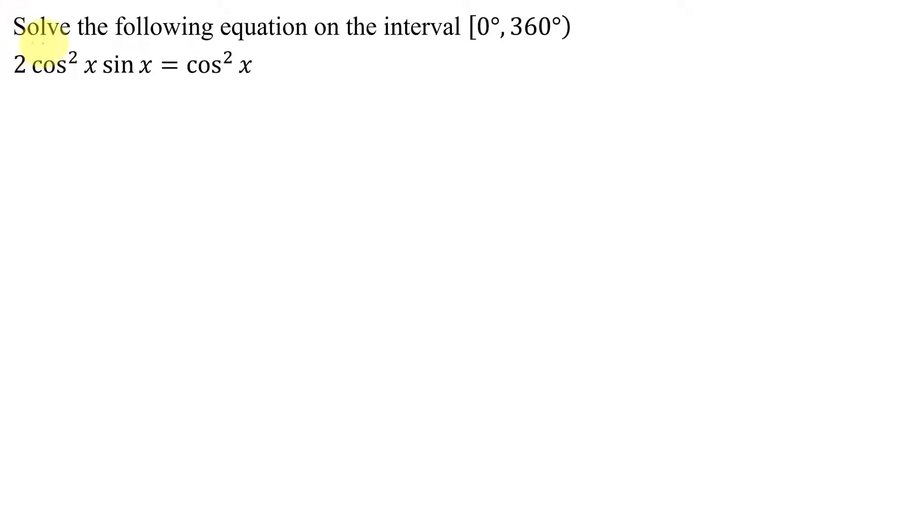In this example, I need to solve the following equation on the interval 0 to 360 degrees. Here's my equation: 2 times cosine squared x times sine x equals cosine squared x.